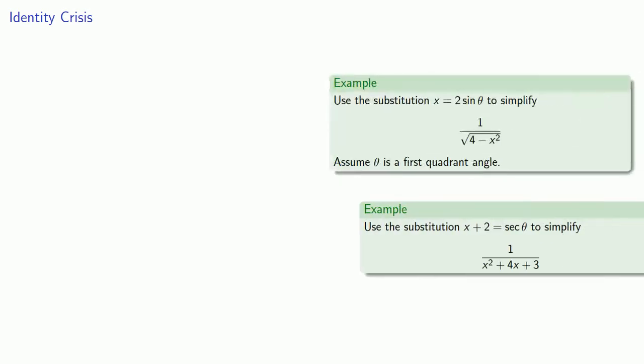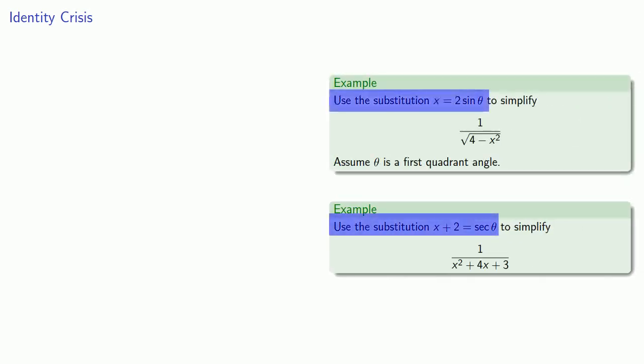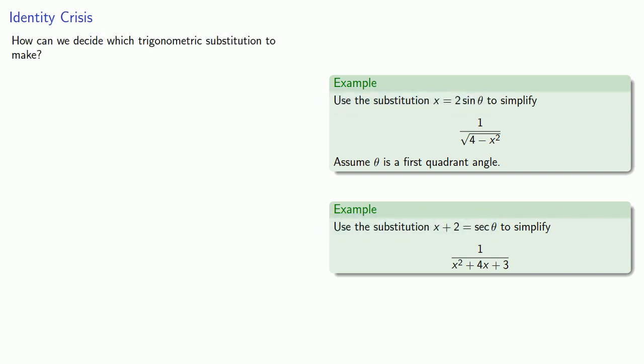Now, in the two examples previously, you were given a particular substitution. So the question is, how can we decide which trigonometric substitution to make? One suggestion is going to come from the domain. So we typically will make a trigonometric substitution in one of three cases.